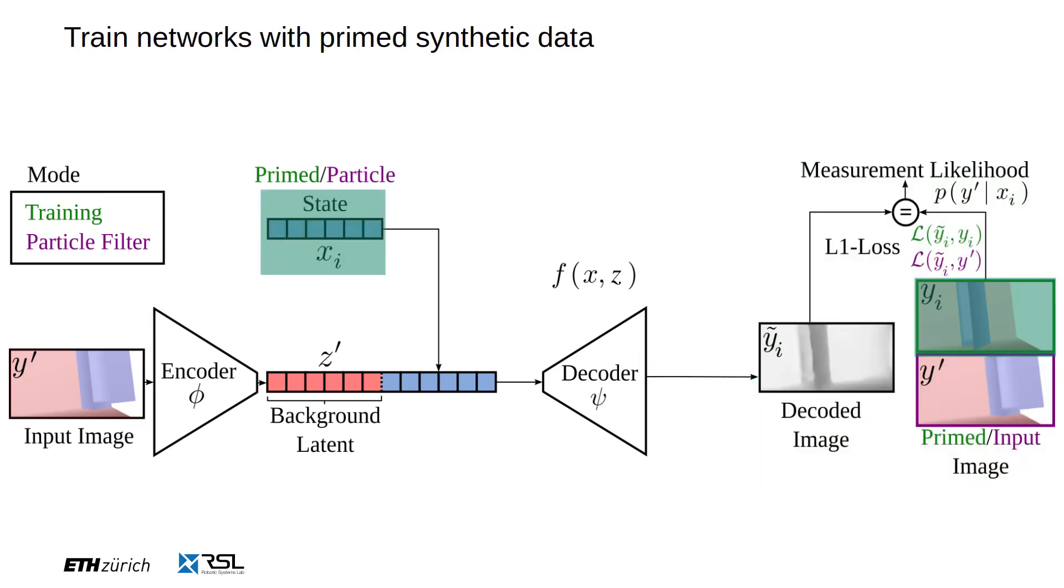For training, the target image is a primed image with the same background as the input image but a different state. We provide the primed state as the condition vector.